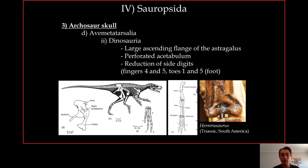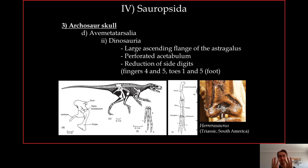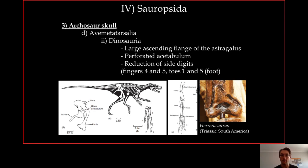In dinosaurs we see reduction of digits one and five on the foot, making it tridactyl — three fingers (digits two, three, and four). On the hand, similarly, there is reduction of fingers four and five, so the hand also has only three fingers (digits one, two, and three). The different fingers are reduced on the hand versus the foot. This tridactyl condition is also something you see in birds.